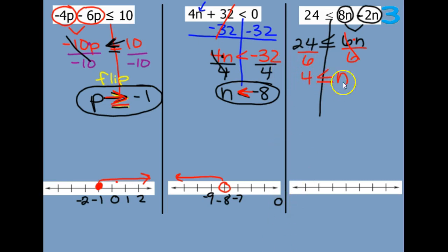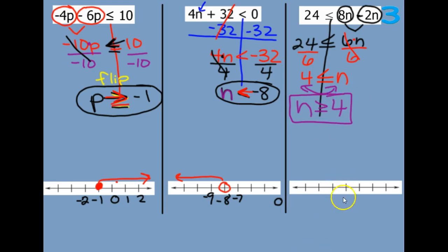This looks good; however, we need the letter on the left, so we need to flip this around — we have n, 4. Flip your symbol so we can graph it. So we have 4 — so 3, 4, 5. This is a closed circle because it's equal to, filled in. Does this not make an L for less than? So the opposite of less than would be greater than, or to the right — greater than 4 would be towards 5.